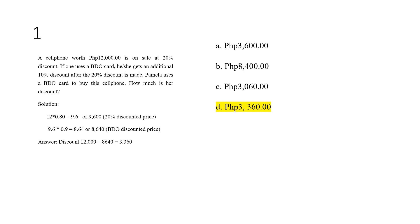That gives us 9.6 — we're dropping the three zeros, computing with the knowledge that we will attach the thousands place for the final value. At the 20%-discounted price of 9.6, we impose the additional 10% discount: 9.6 times 0.9, which is the 90% price, giving us 8.64, or ₱8,640. The total discount is ₱12,000 minus ₱8,640, for a final discount of ₱3,360.